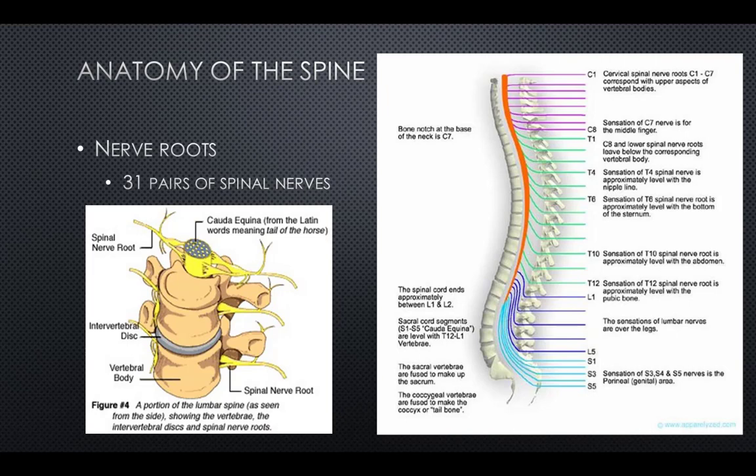In the nervous system, there is a closed-loop system of sensation, decision, and reaction. This process is carried out through the activity of afferent neurons, or sensory neurons, interneurons, and efferent neurons, or motor neurons.